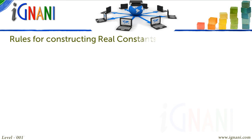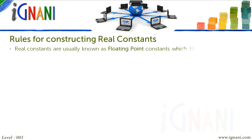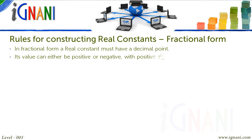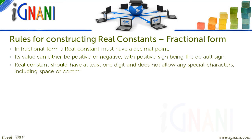Rules for constructing real constants: Real constants are usually known as floating point constants, which can be used in 2 forms — fractional form and exponential form. In fractional form, a real constant must have a decimal point. Its value can either be positive or negative, with positive sign being the default. A real constant should have at least 1 digit and does not allow any special characters, including a space or a comma, within a real constant. These are some examples of real constants in fractional form.